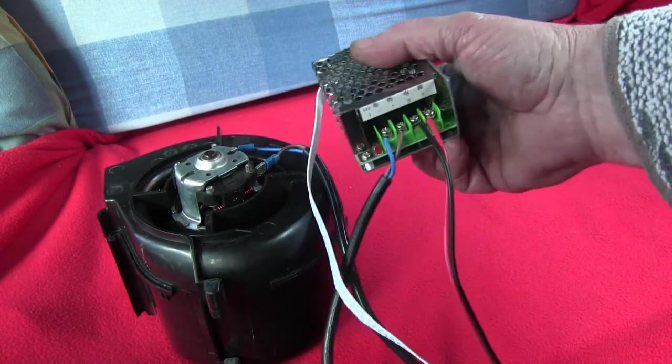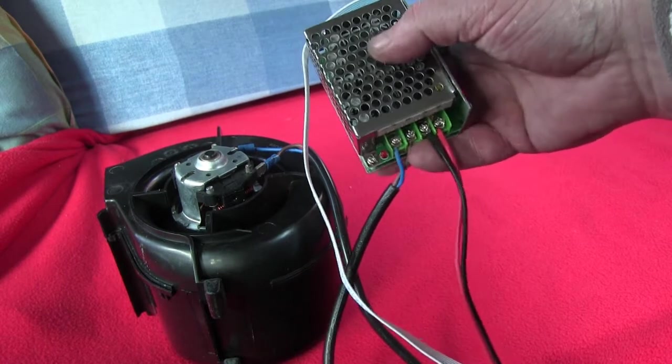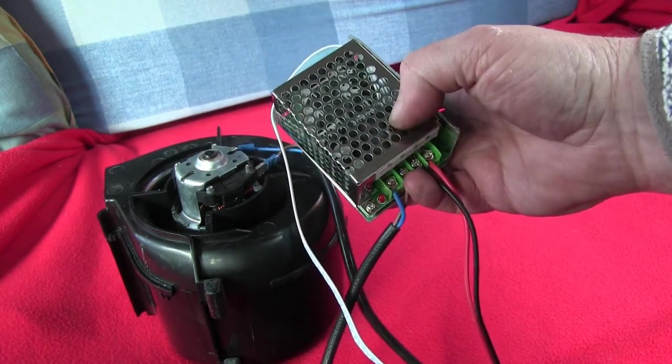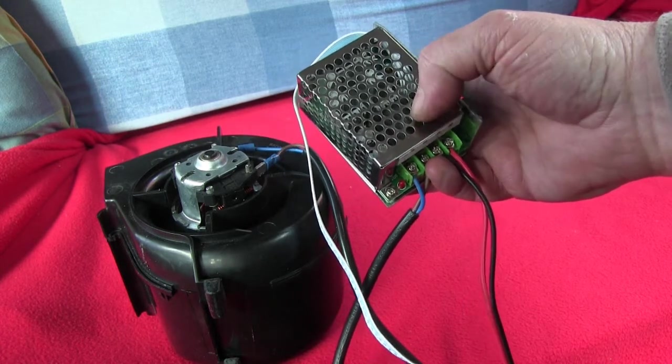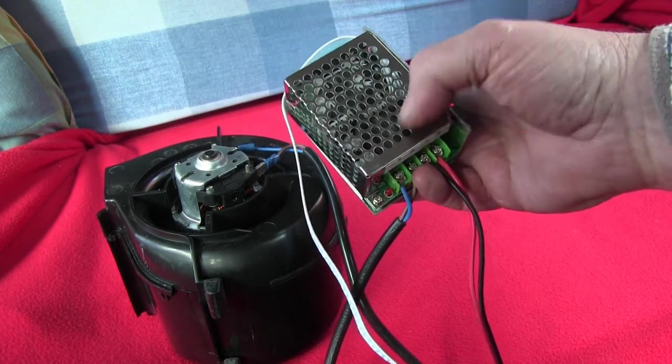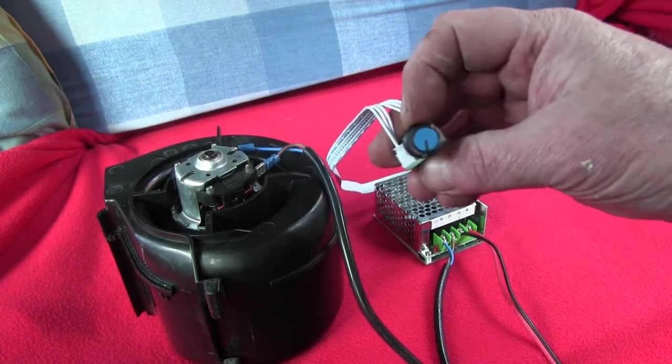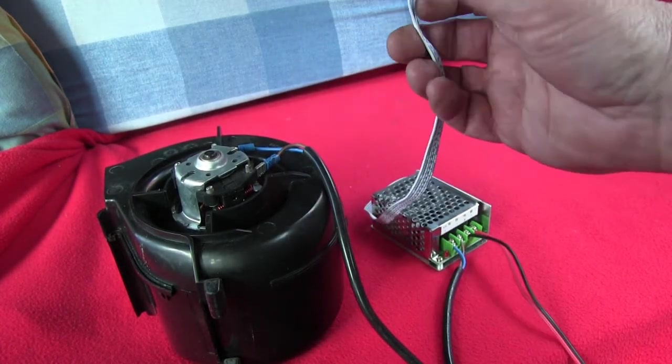And the nice thing about having this as a separate on a fly lead, the actual control, is that you can therefore put it back through where the existing fan controller switch was. And all you've got to do really is cannibalise the switch, gut the insides of it, and so you've just got a hole to be able to push this through. Unless you cook a lot of bacon in your camper, I can't really see much point in that.